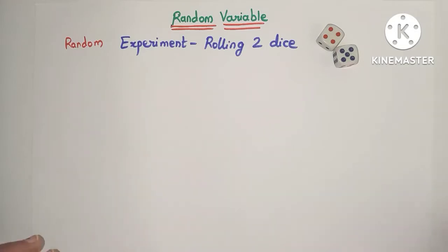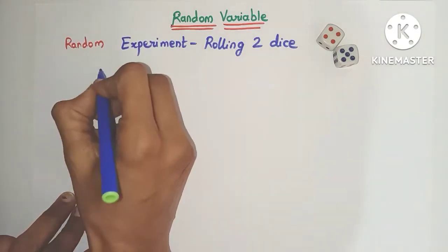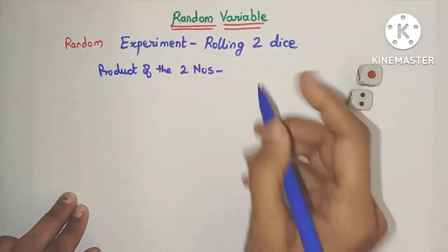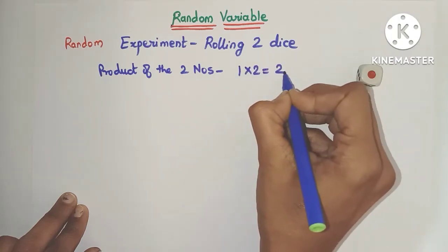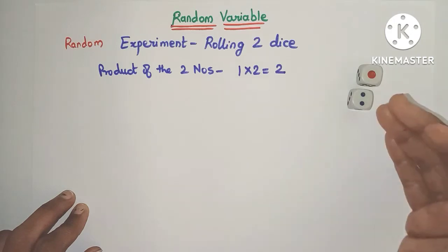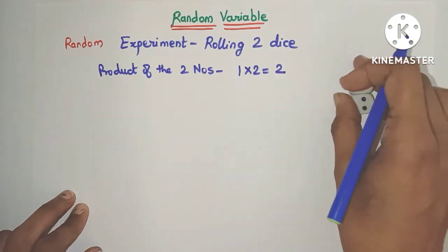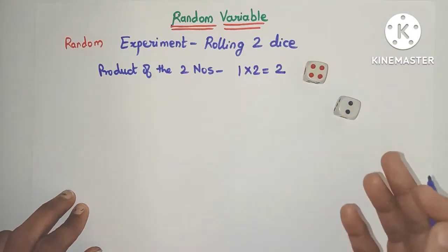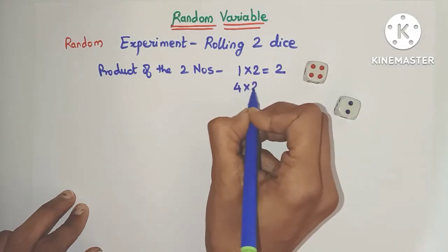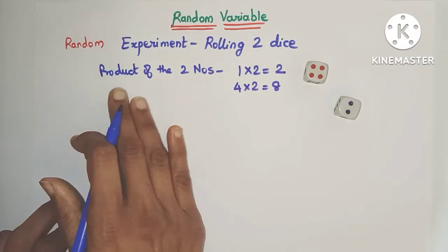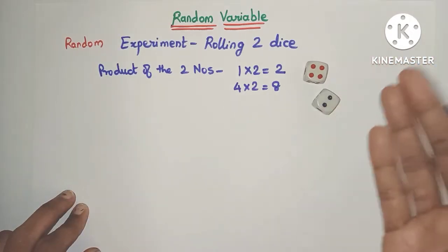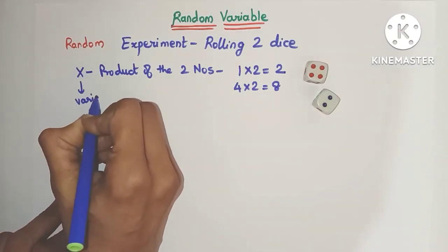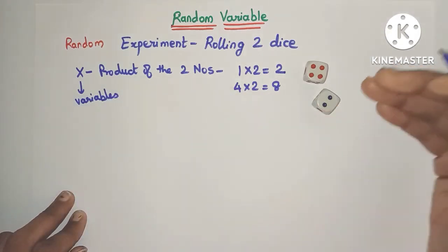Now suppose we wish to know what is the product of the two numbers on the dice. We got one and two, so the product is two. The product won't always be two — if we throw the dice again and get different numbers, here 4 into 2 which is 8. So the product of the two numbers varies as the outcome varies. If we take the product as x, then x will be a variable because its value varies as the outcome varies.